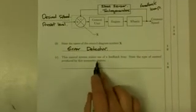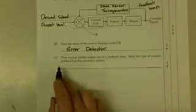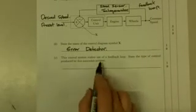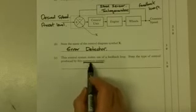It then says, the control system makes use of a feedback loop to state the type of control produced by this automatic system. Well, it gives you the fact that it's an automatic system. That means there's no manual input. Nobody needs to press a button. It automatically happens.